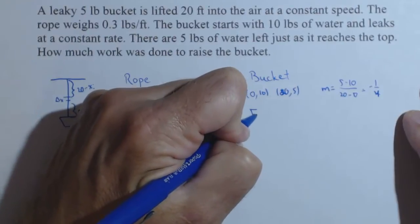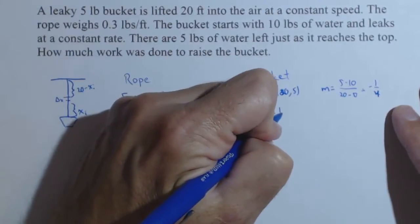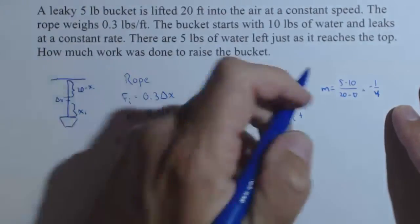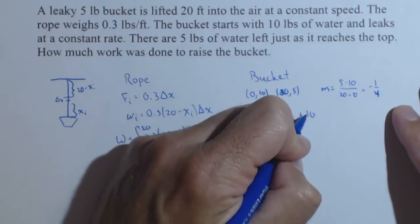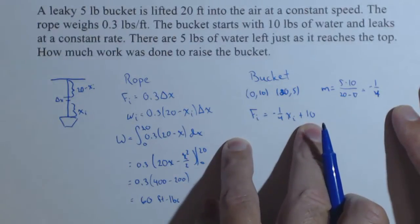So the bucket, the force on the ith slice we can get now is negative 1 fourth x sub i plus 10 because that's what it initially starts at. So if the slice is 0, the force is 10 pounds.